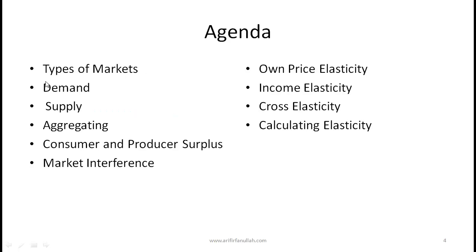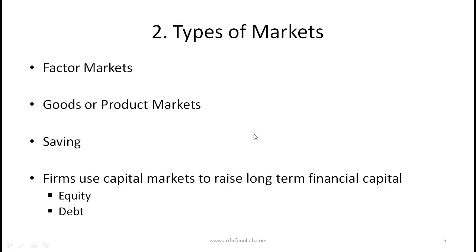The specific plan for today: I'll give an overview of the types of markets, then we'll understand demand, the demand curve, and the demand function. We'll talk about supply, then aggregating demand and aggregating supply. Then we'll discuss consumer surplus and producer surplus, market interference — what happens when governments interfere with markets — various kinds of elasticity including own-price demand elasticity, income elasticity, cross elasticity, and finally calculating different kinds of elasticities.